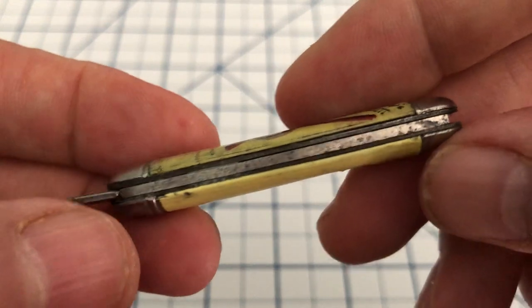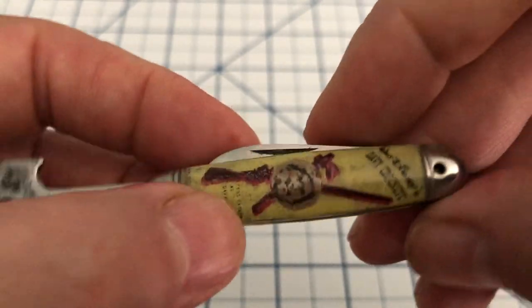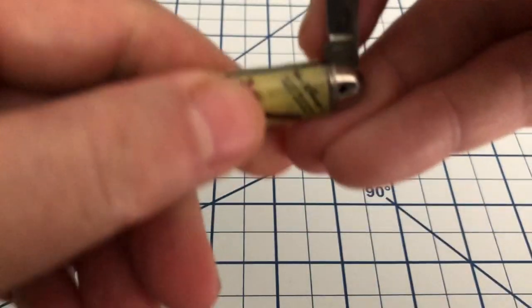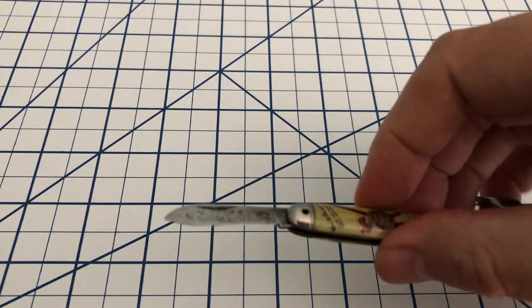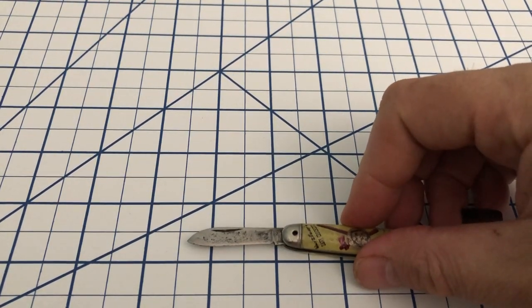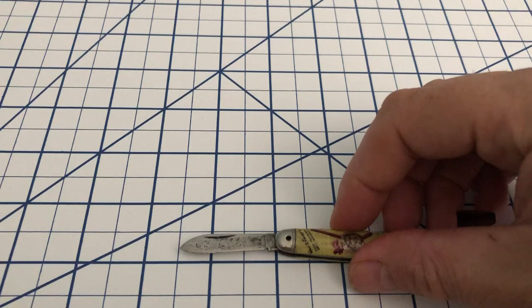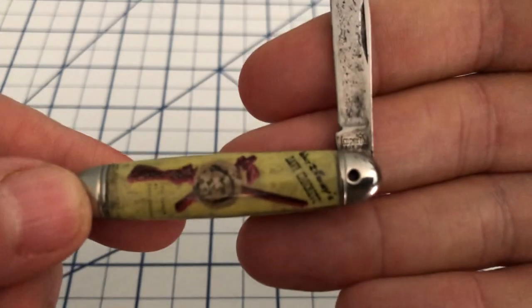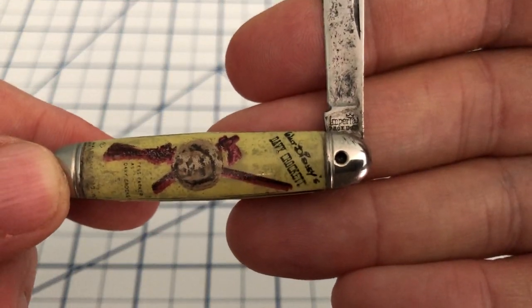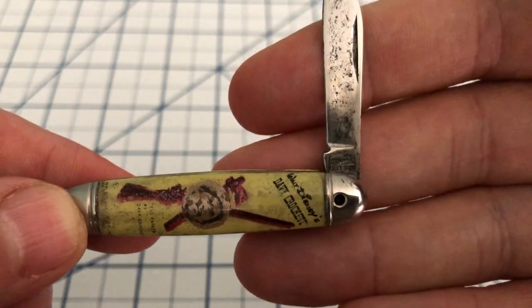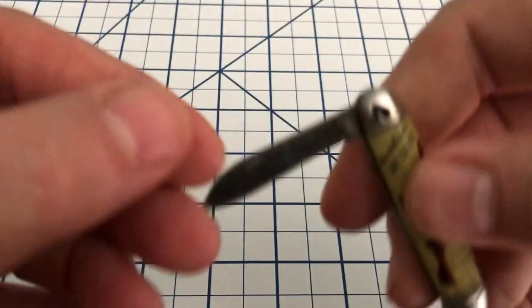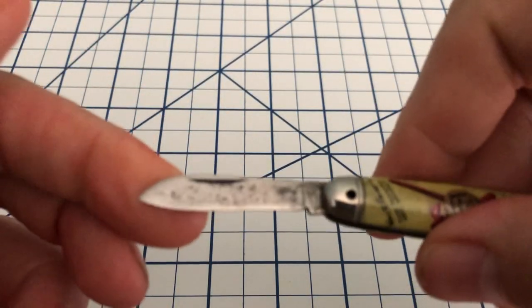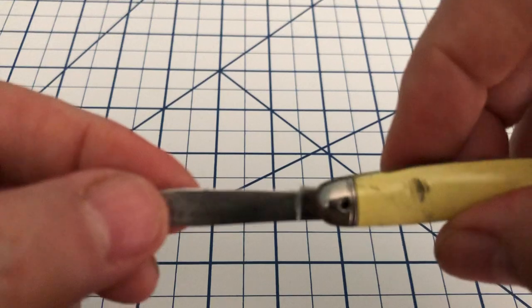Take a look at the back spring, and then you have a little pen blade, right about an inch and a half long. Again, the tang stamp says Imperial, Prov, USA. Again carbon steel, some corrosion on there.